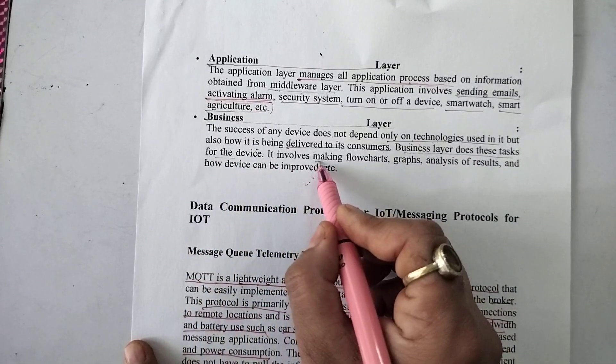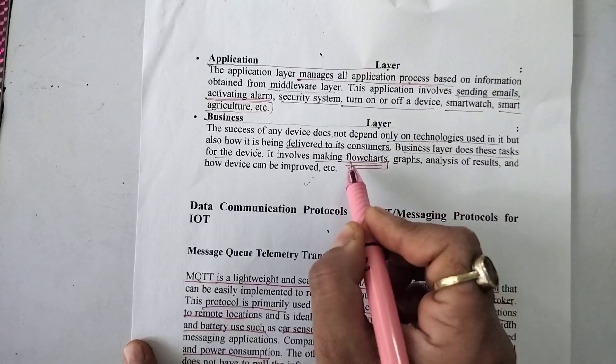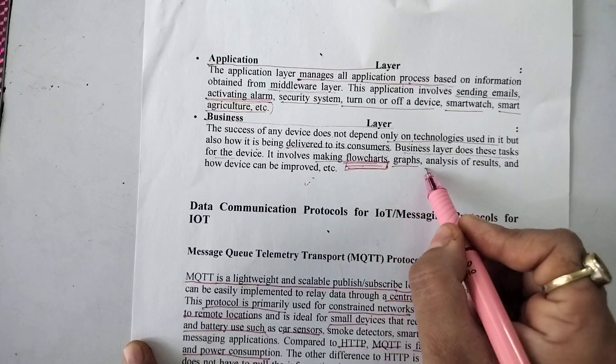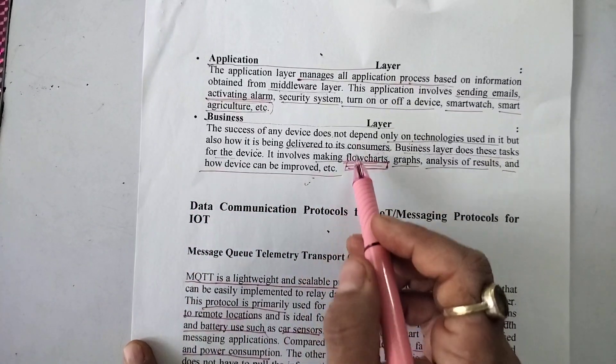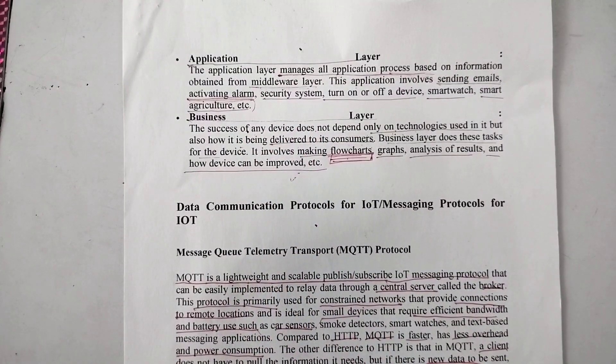Business layer does these tasks for the device. It involves making flowcharts which are understandable even to a layman who is not well versed with technology, graphs, analysis of results, and how the device can be improved, etcetera. All these things are provided by the business layer. These are the five layers of the IoT architecture.